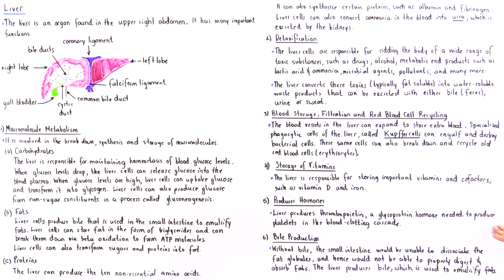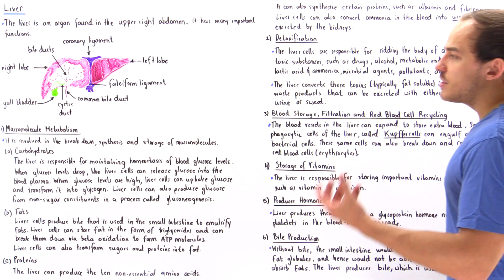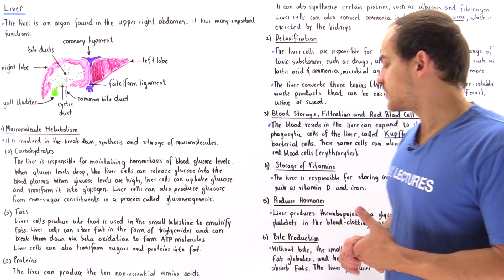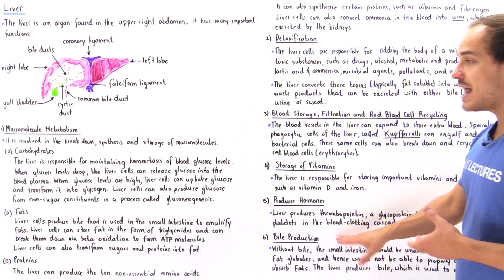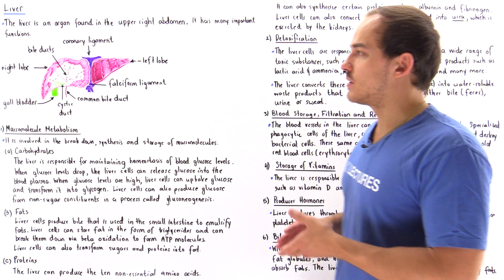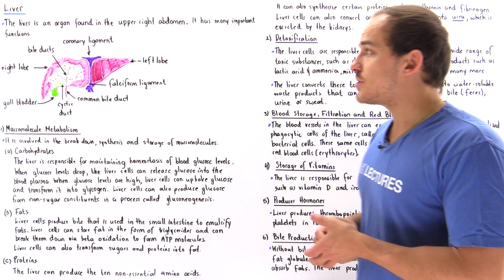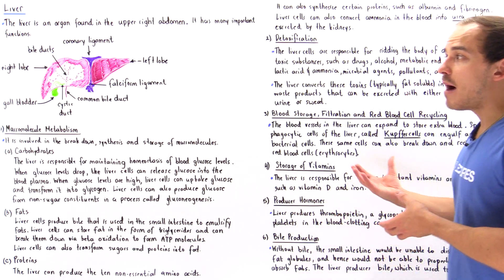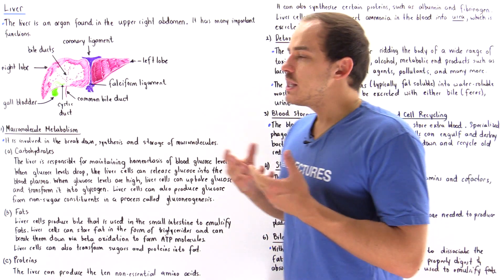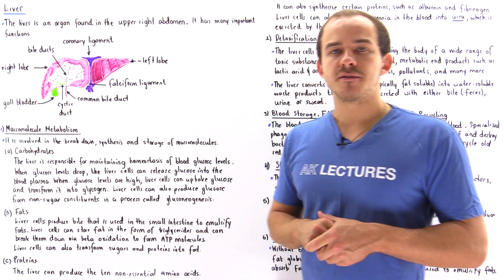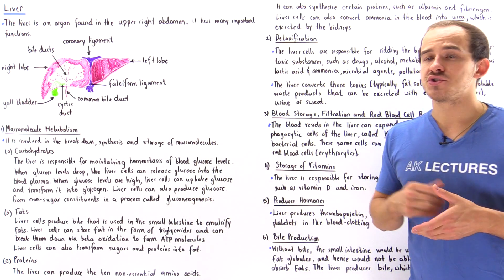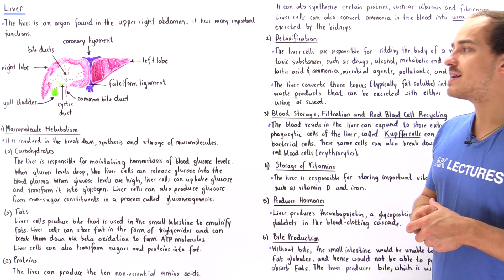Finally, the liver acts as an exocrine gland, producing bile — the special substance needed to emulsify and break down fats inside the small intestine.